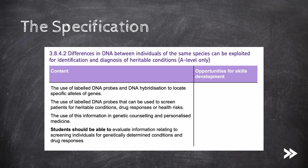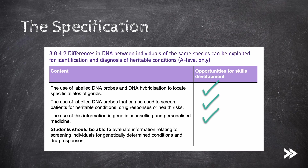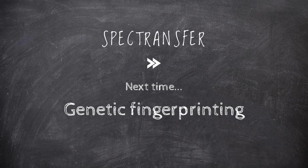That covers this part of the specification. We've covered the use of labeled DNA probes and DNA hybridization to locate specific alleles of genes, as well as the use of labeled DNA probes to screen patients for heritable conditions, drug responses, or health risks. Finally, we have covered the use of this information in genetic counseling and personalized medicine. That's it for now guys, thanks for watching, please subscribe and comment. Next time we will be covering genetic fingerprinting.